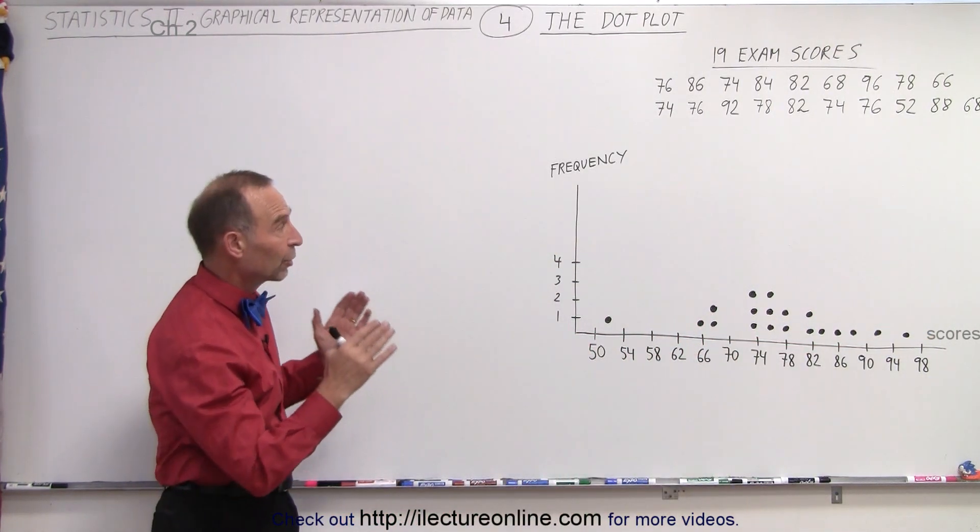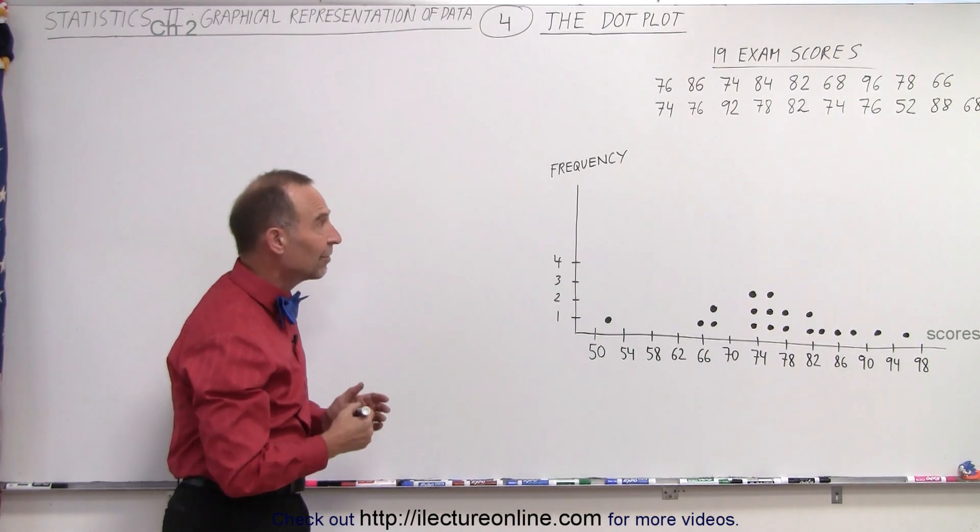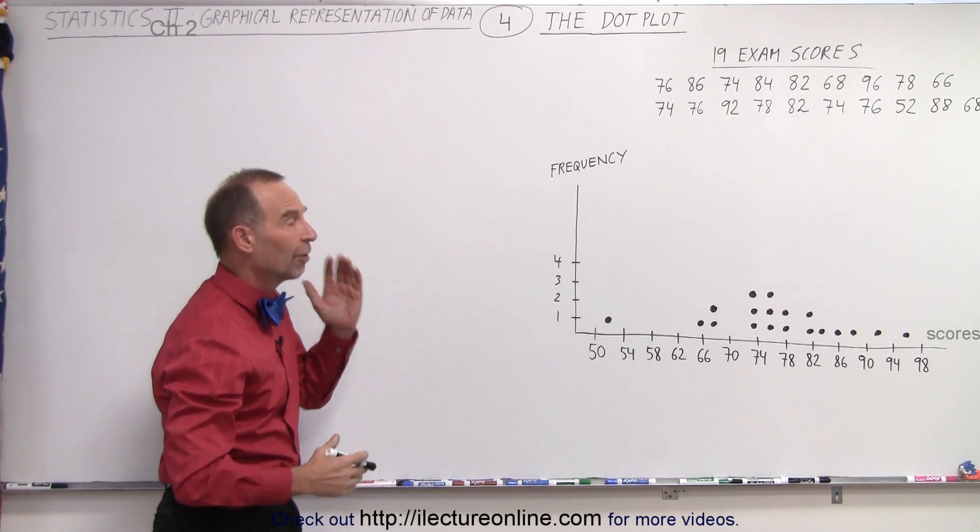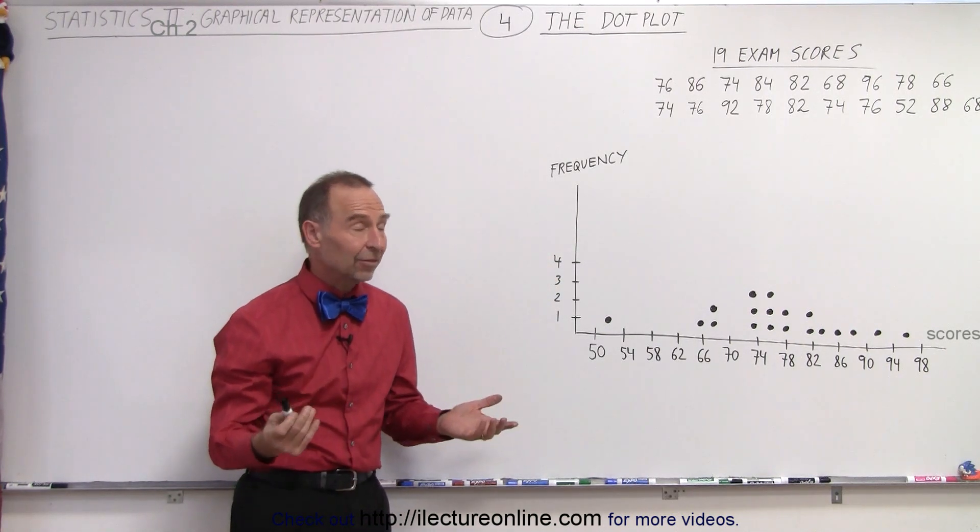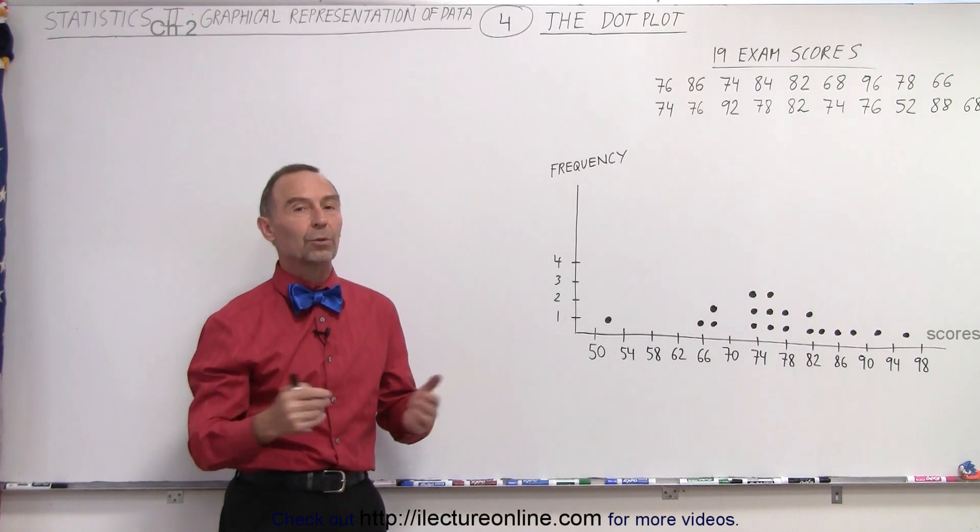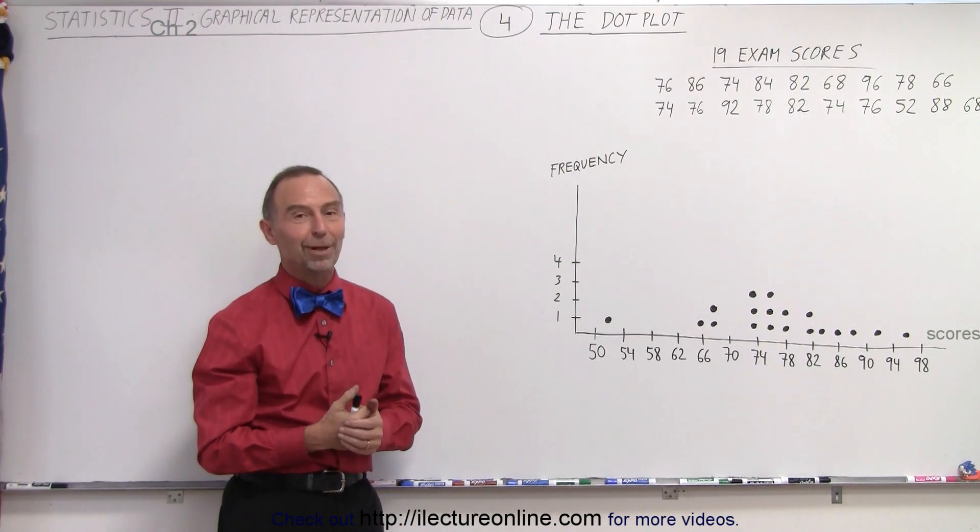So you can see that very quickly, instead of having to manipulate and count and keep a separate tally of what's going on, you can very quickly just make your graph from a raw data sheet. And that's why the dot plot has a particular advantage if you quickly want to see what's going on with your data. And that is what we mean by a dot plot.